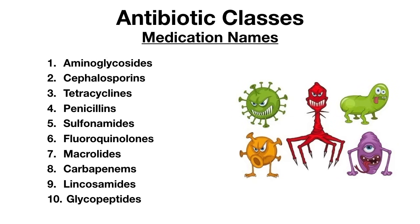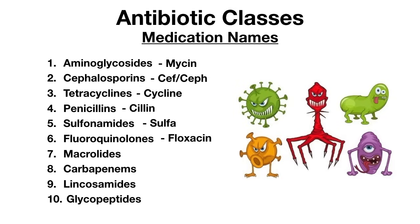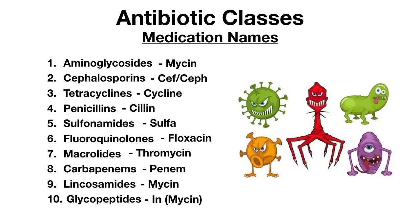Let's wrap up with three tricks to remember these antibiotics. First, drug name endings by class: aminoglycosides end in 'mycin'; cephalosporins start with 'cef' or 'ceph'; tetracyclines end in 'cyclin'; penicillins end in 'cillin'; sulfonamides start with 'sulfa'; fluoroquinolones end in 'floxacin'; macrolides end in 'thromycin'; carbapenems end in 'penem'; lincosamides end in 'mycin'; and glycopeptides end in 'in' or 'mycin.' Note that aminoglycosides, lincosamides, and glycopeptides can all end in 'mycin,' so be careful with those.